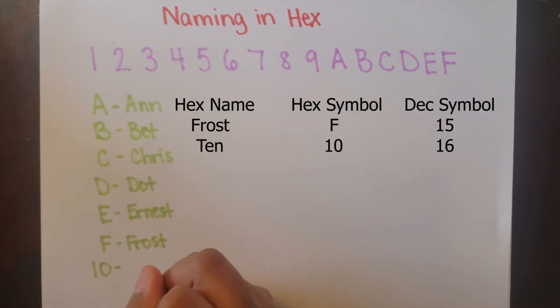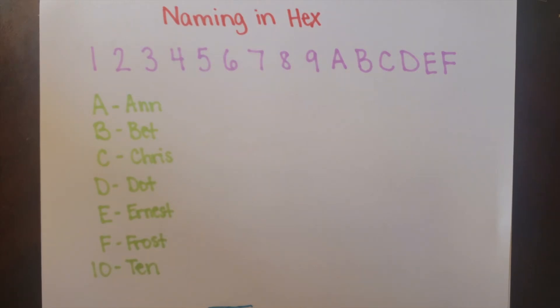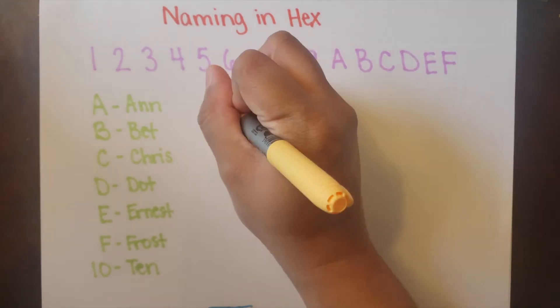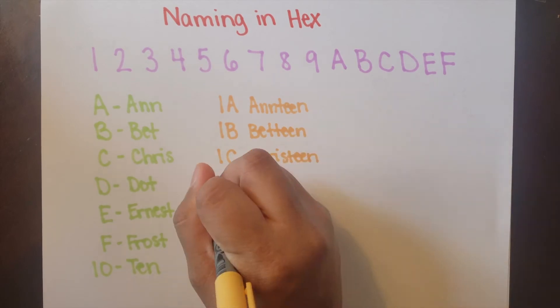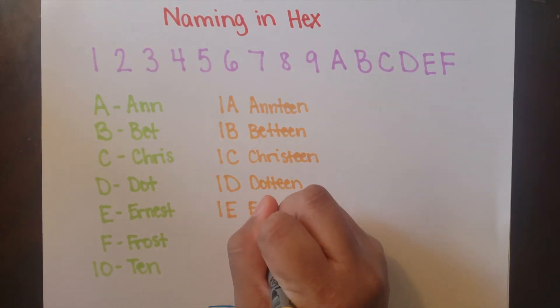The number Frost would be equal to 15 and it'd be followed by 1, 0 which we'll call 10 but remember this is the same thing as 16 in the decimal system. Then your numbers will continue 11, 12, 13, 14 until we get to 1A or Ann-Teen, followed by Beth-Teen, Chris-Teen, Dot-Teen, Ernest-Teen, Frost-Teen, and then 20.